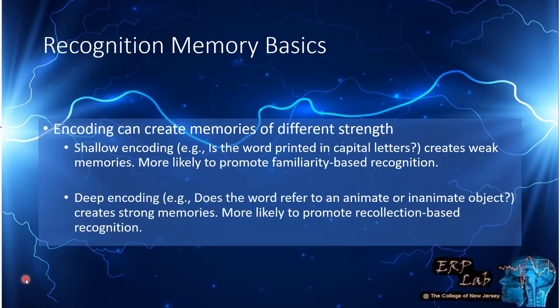On the other hand, if you've encoded items deeply — for example, asking does the word refer to an animate or inanimate object — you have to think about the meaning of the word. This creates a very strong memory and is much more likely to promote recollection-based recognition. So one way to dissociate these two processes is through encoding.